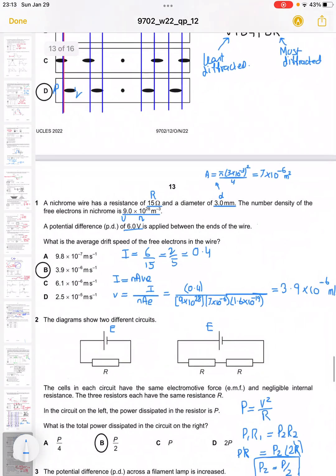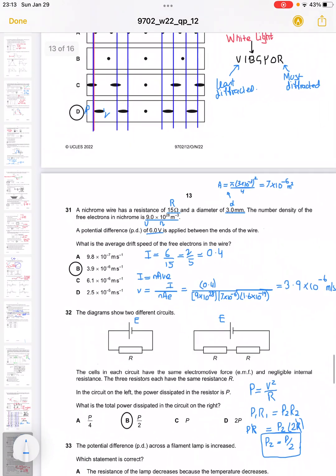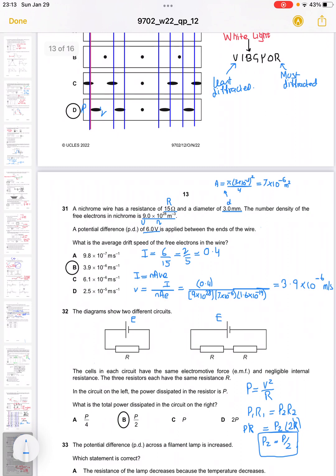Question 31 says that a nichrome wire has a resistance and diameter. The number density of electrons is given and a potential difference V is given. What is the average drift speed of the electrons in the wire? To find the drift speed, we need to apply I equals nAve.